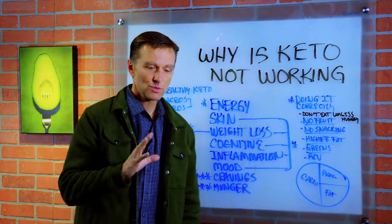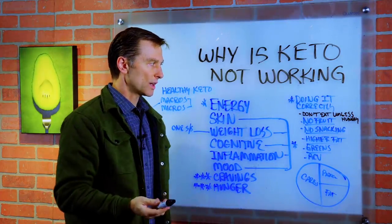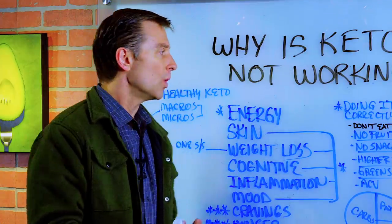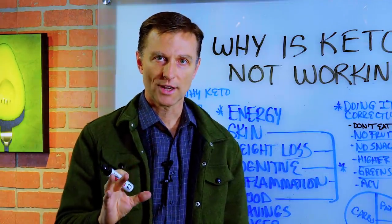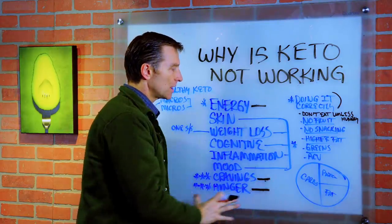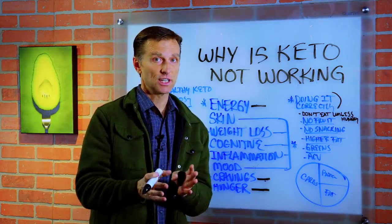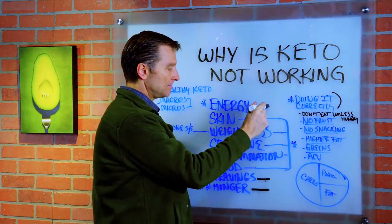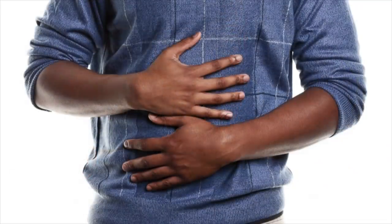So when someone's trying to lose weight, there are various indicators that you're going to look at to know if it's working or not. Out of all these indicators right here, there are three things that are going to be improved initially. If you're doing keto correctly, your energy is going to go up, your cravings are going to go away, and you're not going to be hungry. And this one is really key.